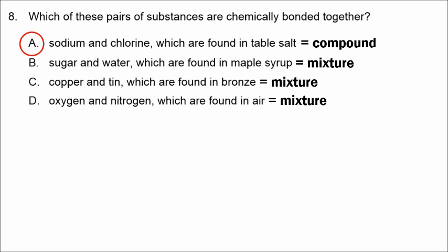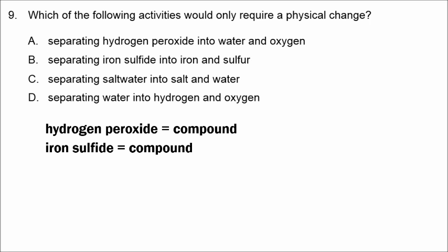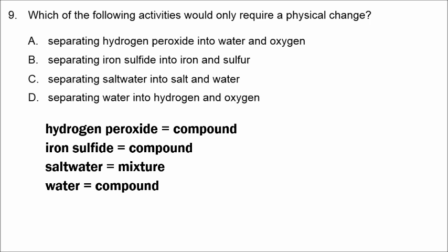In number nine, we're looking for a mixture, because mixtures can be separated by a physical change. Hydrogen peroxide is a compound, iron sulfide is a compound, and plain water is a compound. Salt water is a mixture, so to separate salt from water would require only a physical change because we're merely separating a mixture.